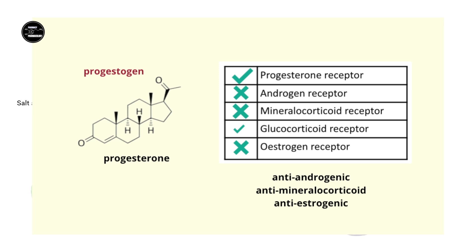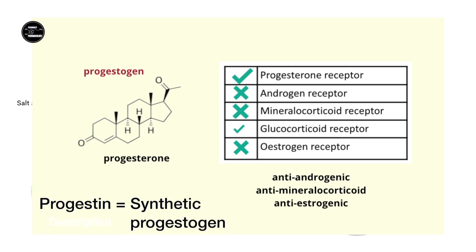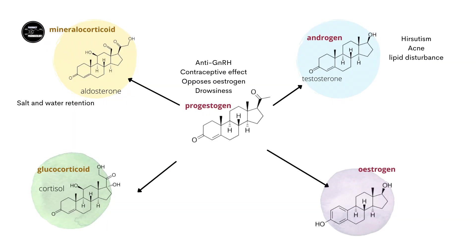In contrast, the synthetic progestogens — also known as progestins — can vary from progesterone's steroid hormone receptor activity profile. For example, the early synthetic progestogens had androgenic activity and no anti-mineralocorticoid activity. Androgenic activity is associated with hirsutism, acne, and lipid disorders.